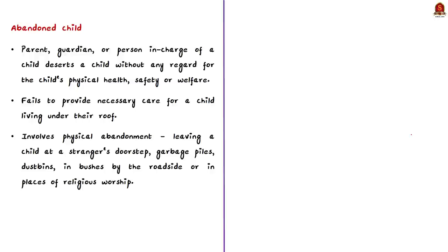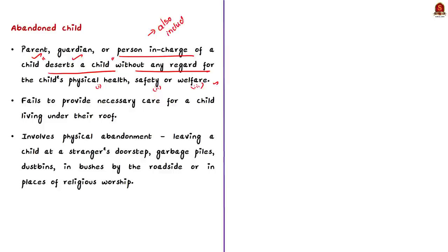Child abandonment occurs when a parent, guardian or a person in charge of a child deserts a child without any regard for the child's physical health, safety or welfare and with the intention of wholly abandoning the child. In some instances, abandonment also means a parent, guardian or person in charge of the child fails to provide necessary care for the child living under their roof.